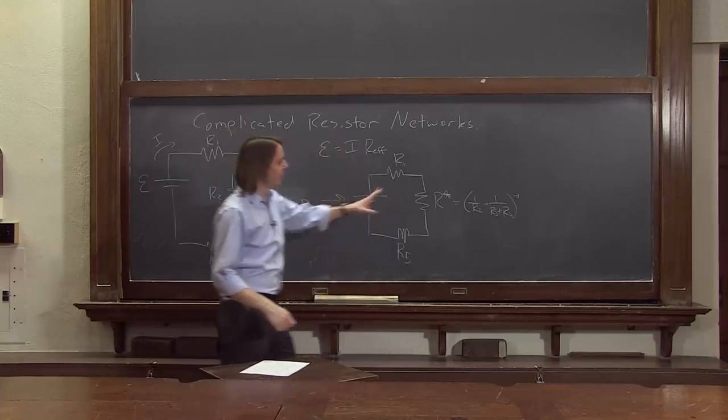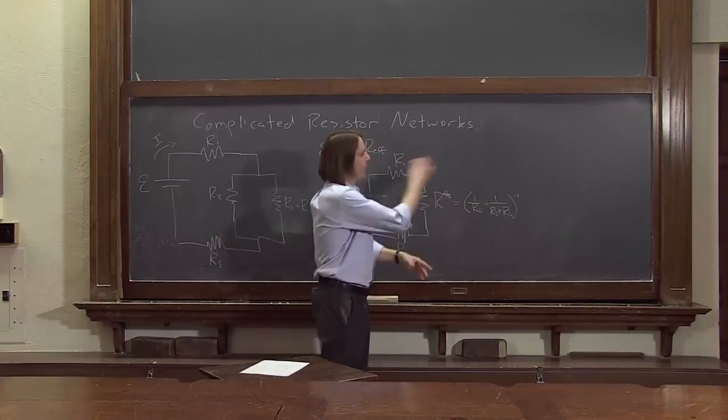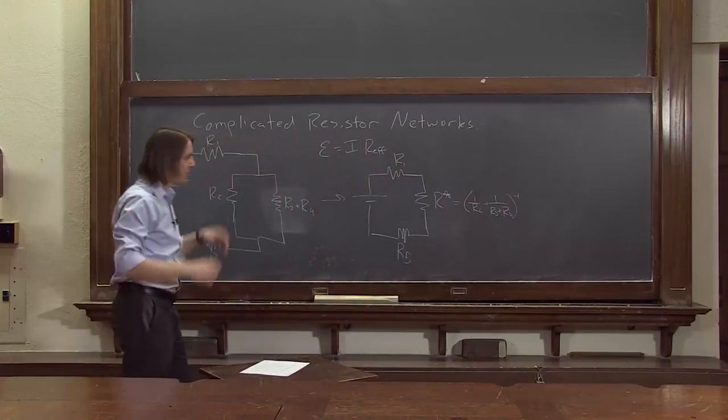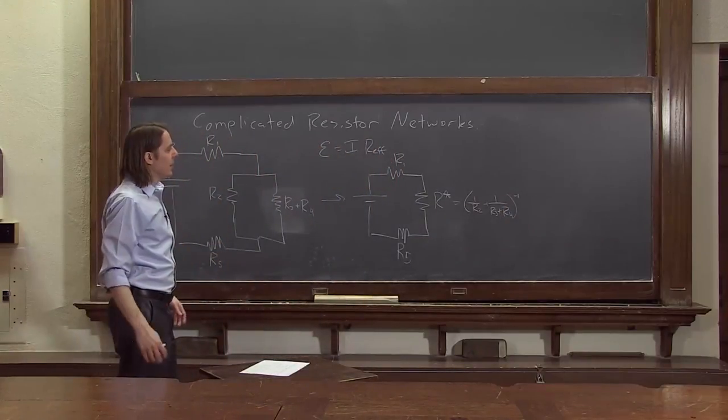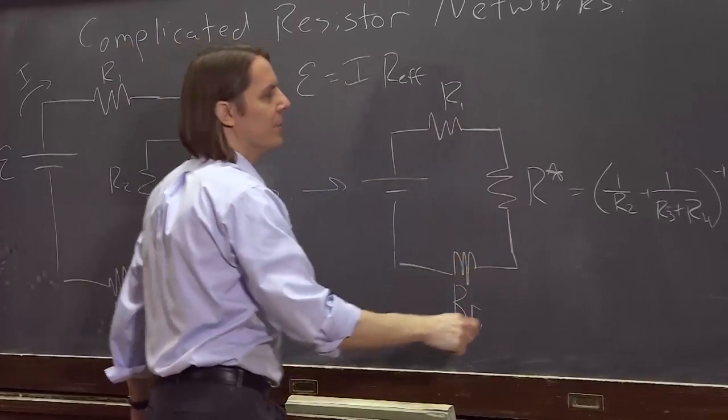So it's one over this equals one over this plus one over this. So I went ahead and just inverted everything. Inverted it to get back to R star and inverted that whole side of the equation to get back to R star. And then we have it back down to series. So now it's just this plus this plus this.